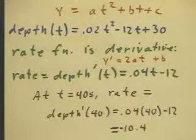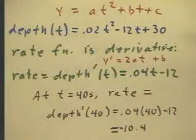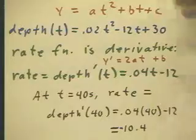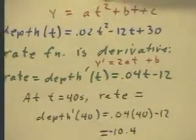Negative 10.4 what? Well, that depends on the units again. If we assume that everything is in centimeters and seconds, as with our models that we've measured in class, that's going to be negative 10.4 centimeters per second.